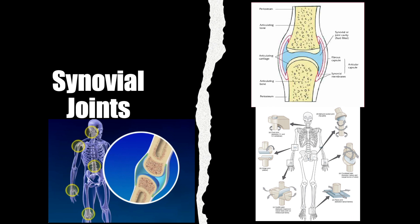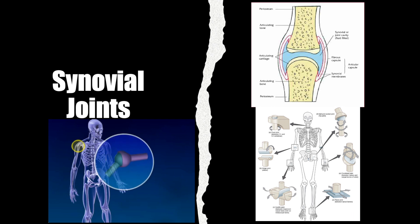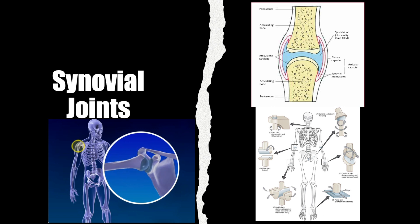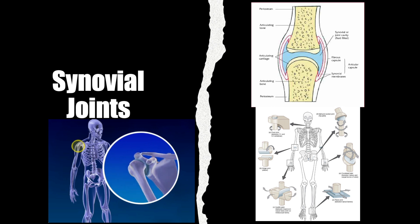Synovial joints are marvels of natural engineering that give us a remarkable range of motion. Imagine each of these joints as a specialized structure filled with lubricating liquid known as synovial fluid, nestled in a small cavity. This setup allows the ends of our bones to glide past each other smoothly. Our bodies are full of synovial joints — take the ball and socket joint in our shoulders and hips, like the multi-directional joysticks of our bodies, offering a wide range of movement across multiple axes.